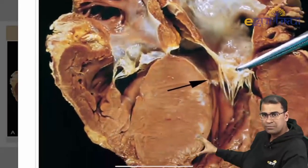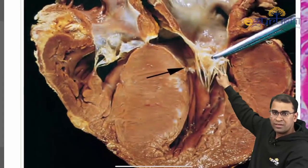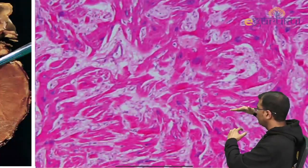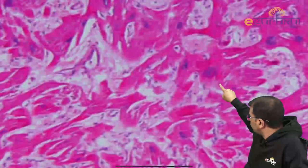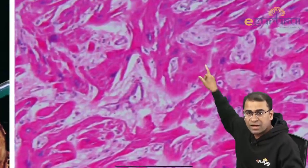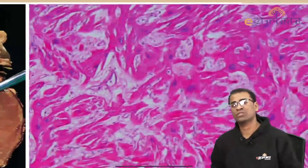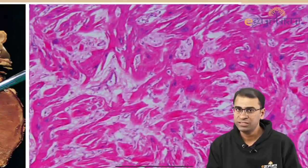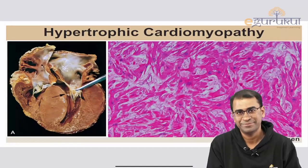Morphologically, the image shows a banana-like configuration with an enlarged septum in contrast to the left ventricular wall. The histological image shows myocyte disarray — none of the myocytes are arranged horizontally; they are all haphazard. Look at the enlarged nucleus and the basic fibrosis expected in hypertrophic cardiomyopathy. After this, Dr. Thameen will discuss the clinical features, complications, and treatment.